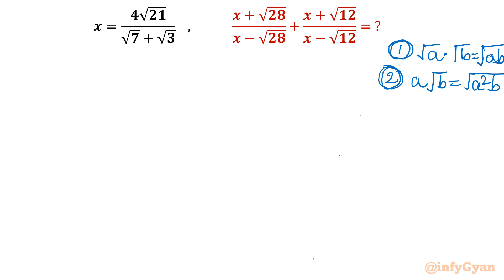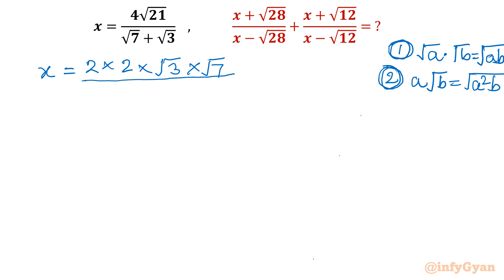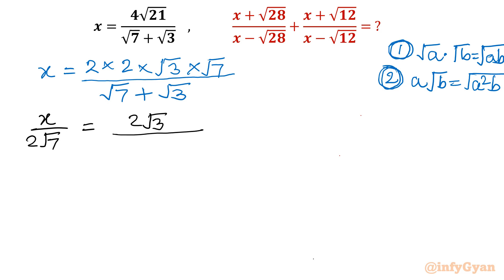Now, x = 4√21 / (√7 + √3). I can write 4 as 2 × 2, and √21 as √3 × √7. So x = 2 × 2 × √3 × √7 / (√7 + √3). Now I am going to divide both sides by 2√7, giving x/(2√7) = 2√3 / (√7 + √3).